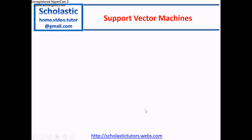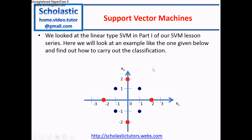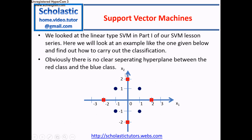In this lesson we looked at the linear type SVM in Part 1 of our SVM lesson series. Here in this lesson we are going to look at a much more complex example where we have a blue class and a red class, and clearly we can't find a separating hyperplane between them. There is no clear separating hyperplane.